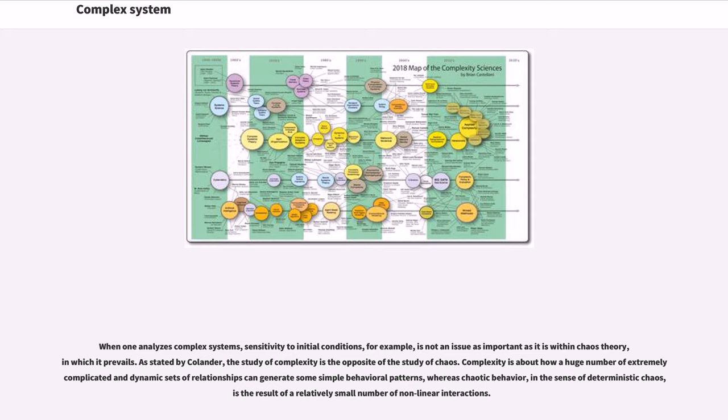As stated by Cilliers, the study of complexity is the opposite of the study of chaos. Complexity is about how a huge number of extremely complicated and dynamic sets of relationships can generate some simple behavioral patterns, whereas chaotic behavior, in the sense of deterministic chaos, is the result of a relatively small number of non-linear interactions.